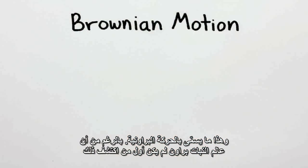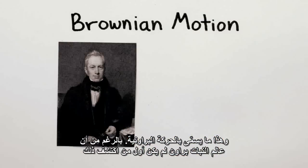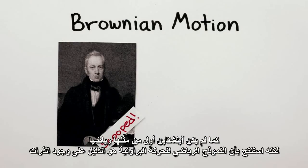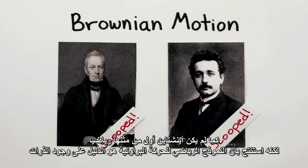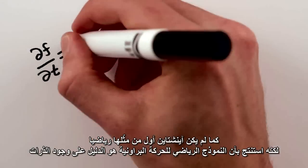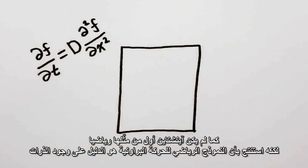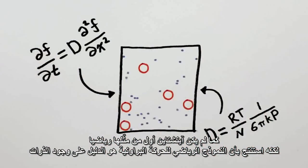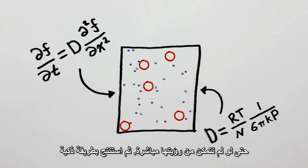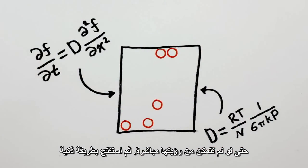This is called Brownian motion, despite the fact that botanist Brown wasn't the first to discover it, and similarly Einstein wasn't the first to describe it mathematically. But he did draw the conclusion that the mathematical description of Brownian motion is evidence for the existence of atoms, even if you can't see them directly.